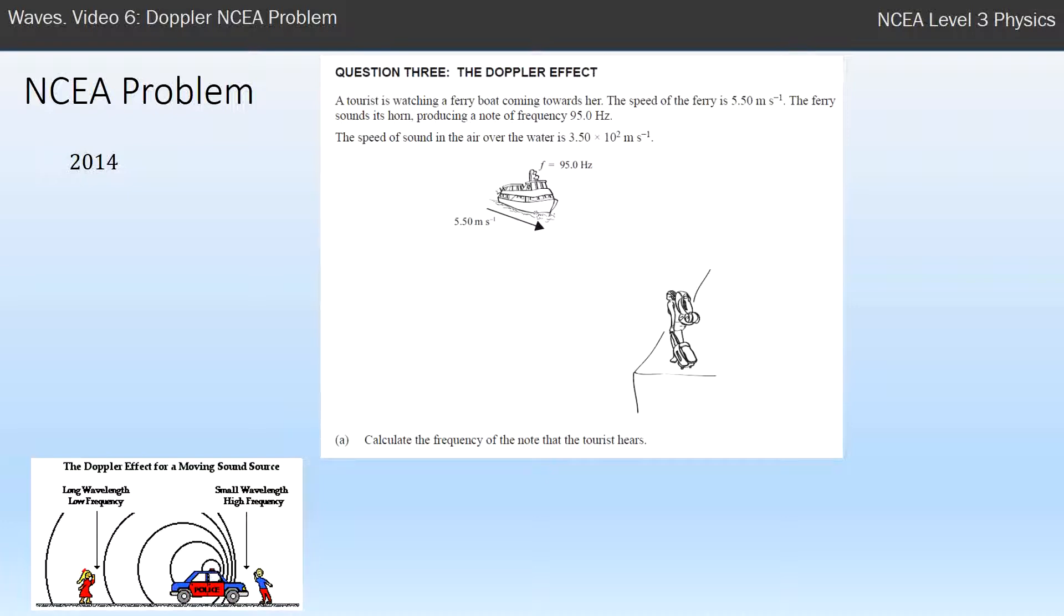So in this case the boat's moving towards the tourist, we're going to get a higher frequency so that when I use my formula here I know that my observed frequency, which is F dash, should be larger than F and the only way I get that is with my fraction there, I have a number on the bottom that's small and the only reason I get a small number is with a minus.